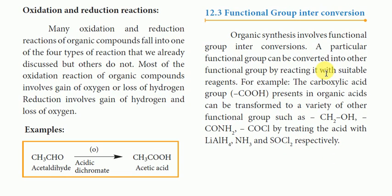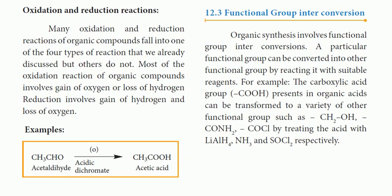If we take a carboxylic acid group, it can be converted into an alcohol, an amide, or an acyl chloride. The reagents used are: lithium aluminum hydride (LiAlH₄) to give the alcohol (CH₂OH); ammonia to give the amide; and thionyl chloride to give the acyl chloride (COCl). These are the suitable reagents for this functional group interconversion.